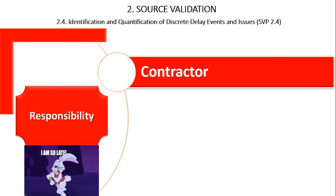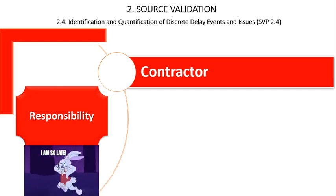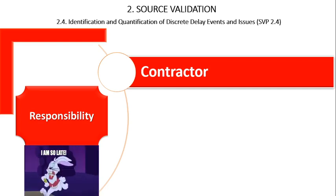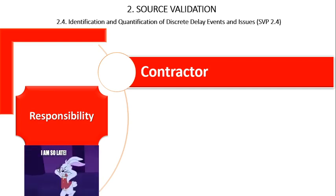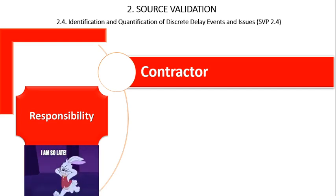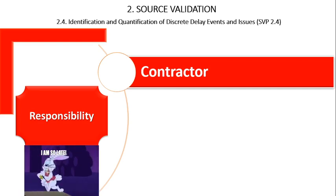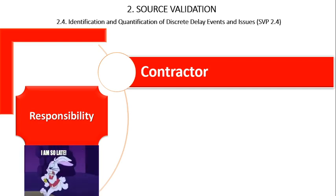When the forensic schedule analyst does not possess adequate information to make an independent determination of responsibility for the delay, the analyst may have to proceed with the analysis based on an assumption. Such assumptions should be noted and clearly stated as part of the final analysis product along with the basis of such assumption. Contractor delay is any delay event caused by the contractor or those under its control, or the risk of which has been assigned solely to the contractor.